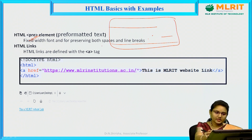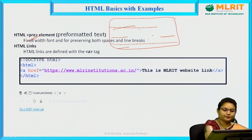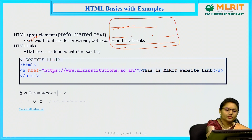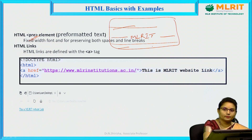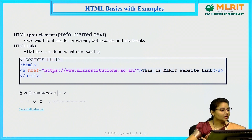The pre tag preserves line breaks and tab spaces. So if you want to print something like 'MLRIT' in the middle of your page with a tab space, you can place it inside a pre tag and the same spacing will be printed. Then we have HTML links — whenever you want to navigate from one page to another in just one click, you use HTML links.